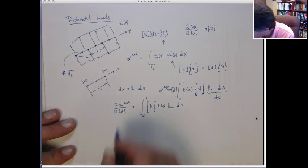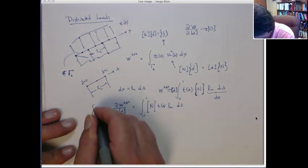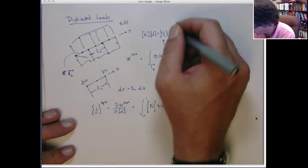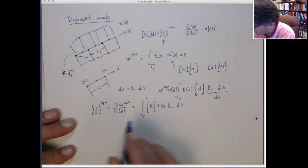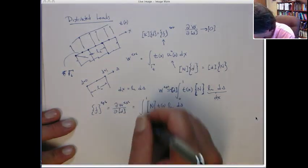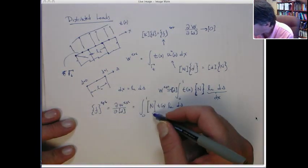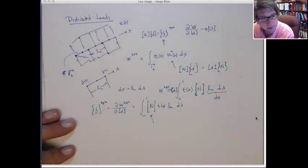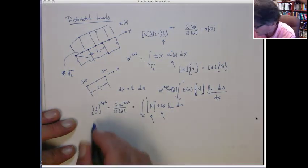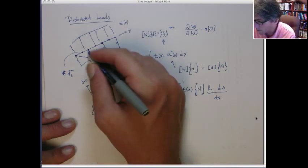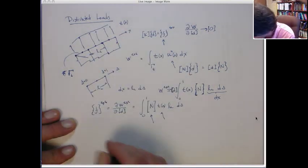So this quantity here is actually the external force, this external force, right, that arises from the distributed load. So this is the equation, okay? So you can use any element you want, put in the shape functions on that edge, and then for any given traction, you can then compute the external forces. And these would be nodal values that you then would apply on the nodes, okay? So let's do a real simple example.